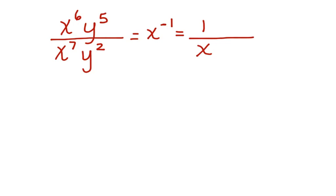y to the 5th divided by y squared, I'm going to subtract these exponents, and I'm going to have y to the 3rd in my numerator. My final answer is y to the 3rd over x.